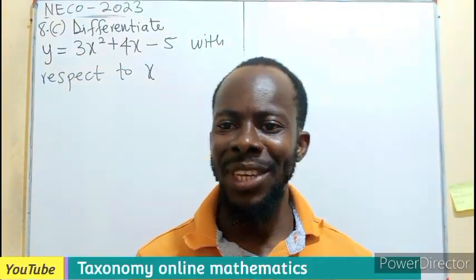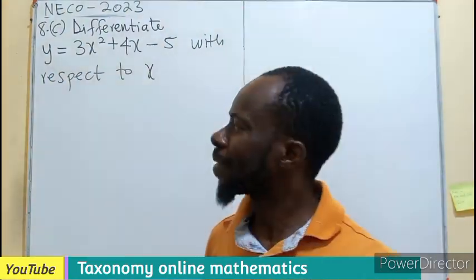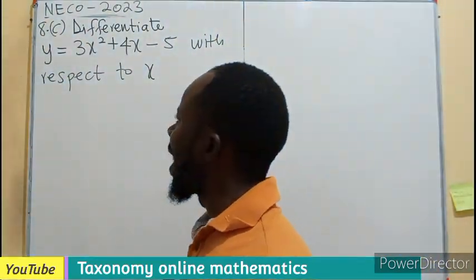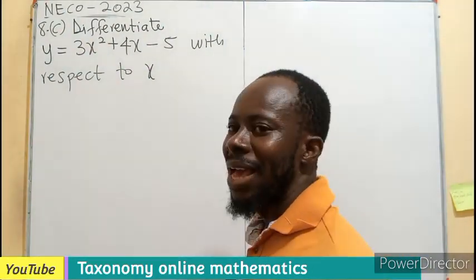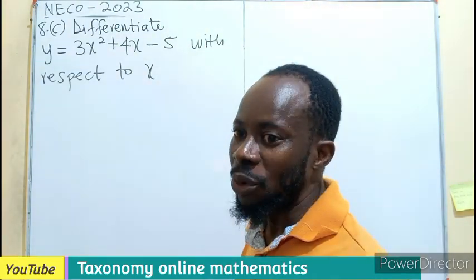Hello, NECO 2023, section B, question 8B. We have to differentiate y equals 3x squared plus 4x minus 5 with respect to x. A simple differentiation.